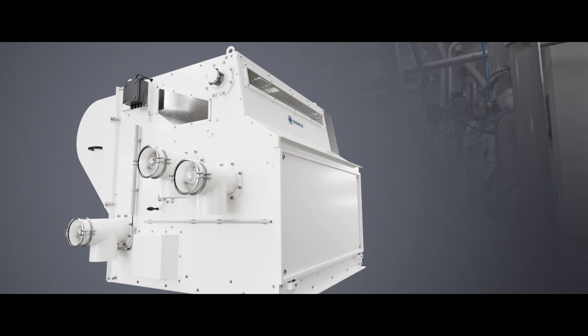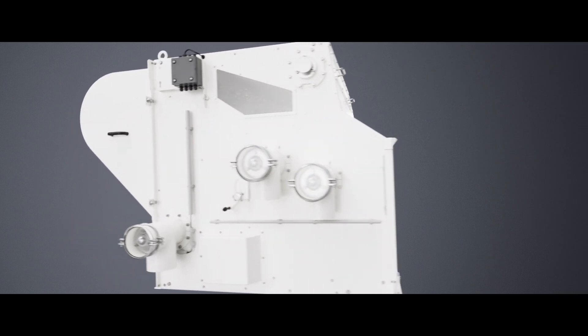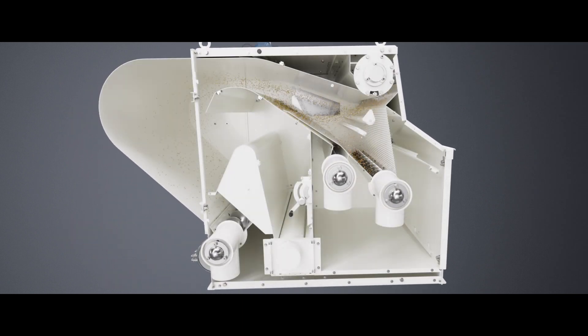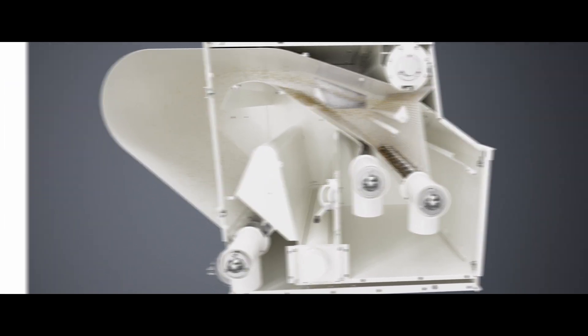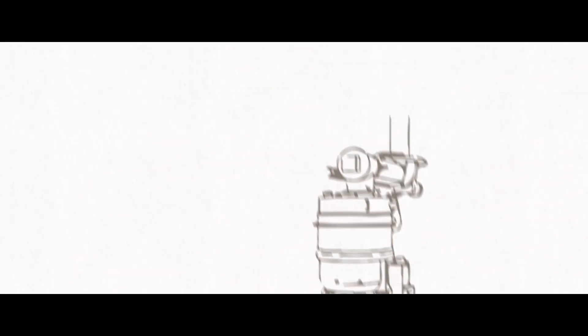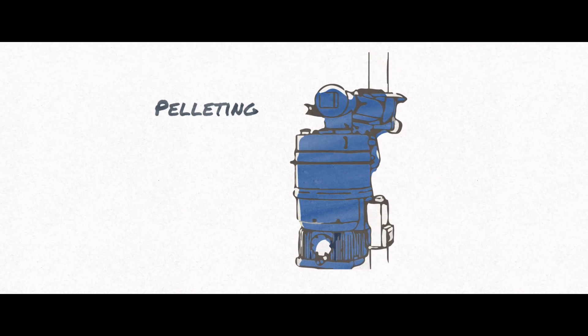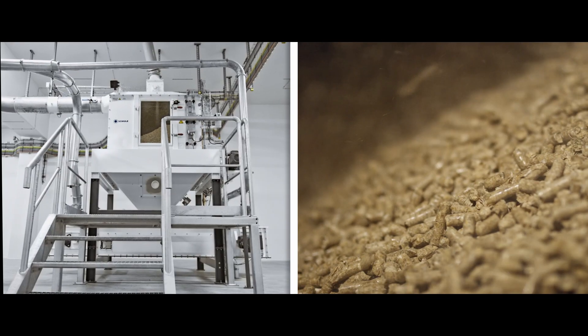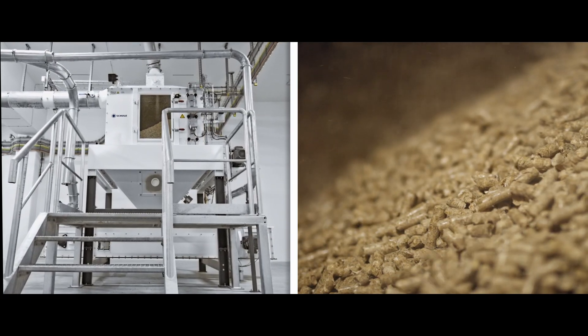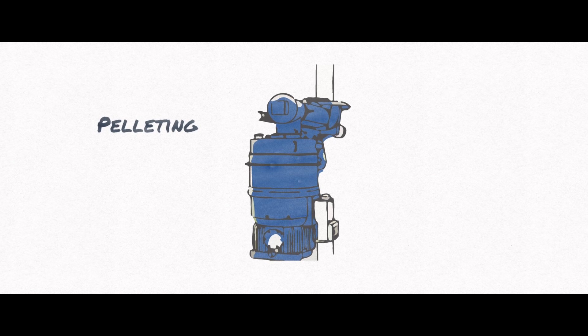In the closed circuit husk separator, the mixture is freed from the husks. A circulating air flow separates the light particles and feeds them into the expansion chamber. From there, they reach the pelleting plant. All separated oat components are sustainably processed into pellets for animal feed. This is done in a particularly energy-efficient way, without the need of a separate pre-grinding process or the use of steam.